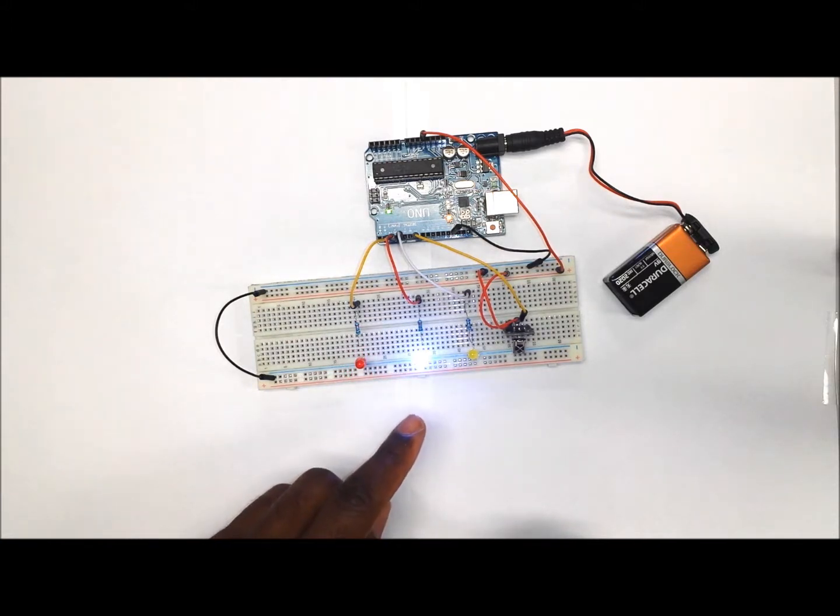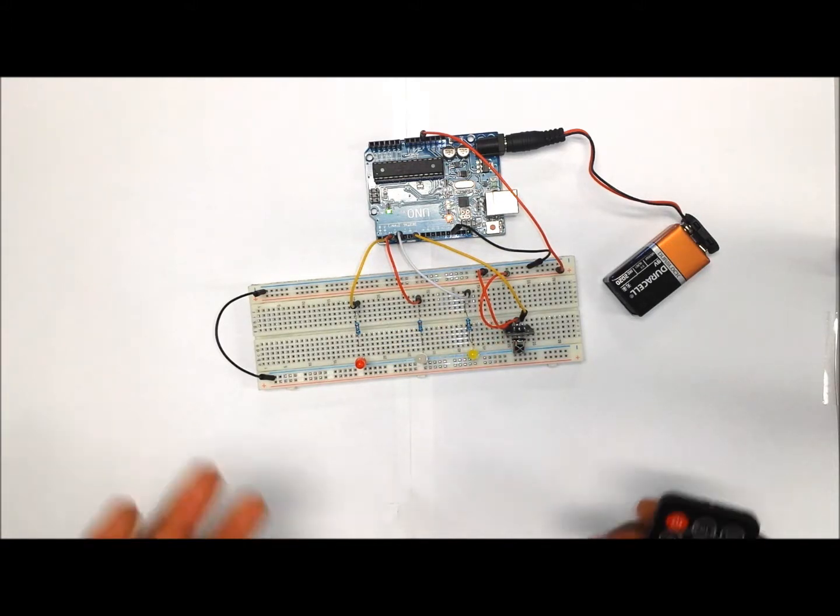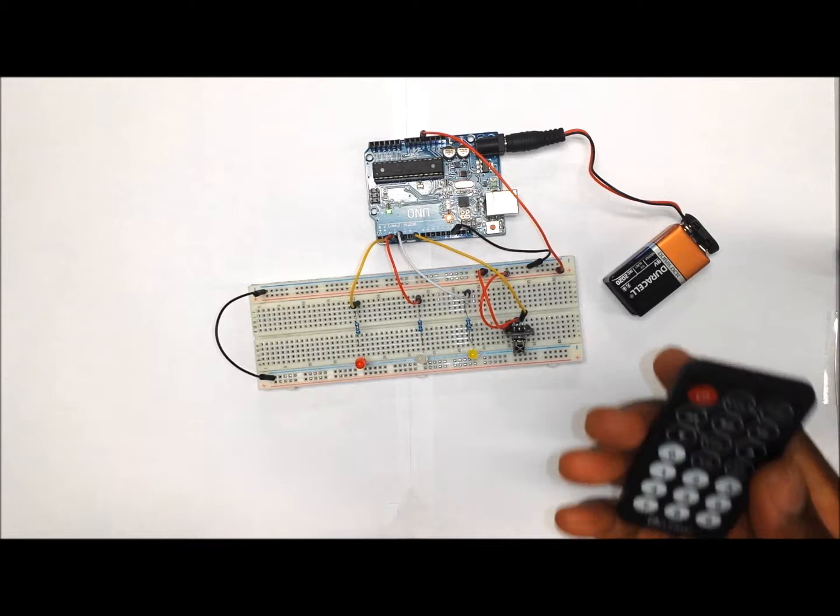Press two, it will turn the white light on. Turn it off. On. Off. This is how you control the LED lights using the remote.